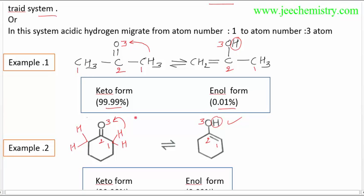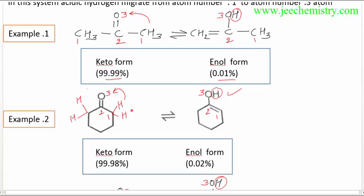This type of tautomerism we will learn in detail in the next topic with more examples of tautomers and how they are formed. If a compound is given and we are asked to find its tautomer — if the keto form is given, we find the enol form, and if the enol form is given, we find the keto form. In an exam, there may be four options asking which pair of compounds shows tautomerism. We should know that keto form and enol form are tautomers of each other.